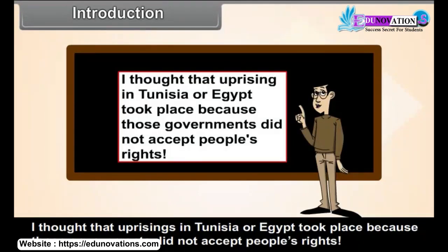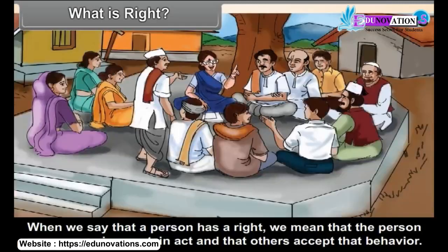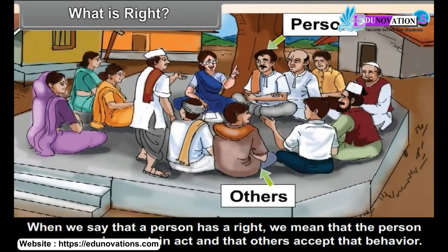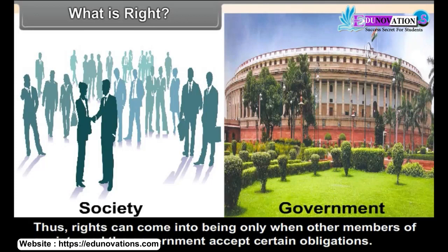I thought that uprisings in Tunisia or Egypt took place because those governments did not accept people's rights. What is a right? When we say that a person has a right, we mean that the person can engage in a certain act and that others accept that behavior. Having a right also means that the person can expect specific behavior from other persons and from the government. Rights can come into being only when other members of society and the government accept certain obligations.